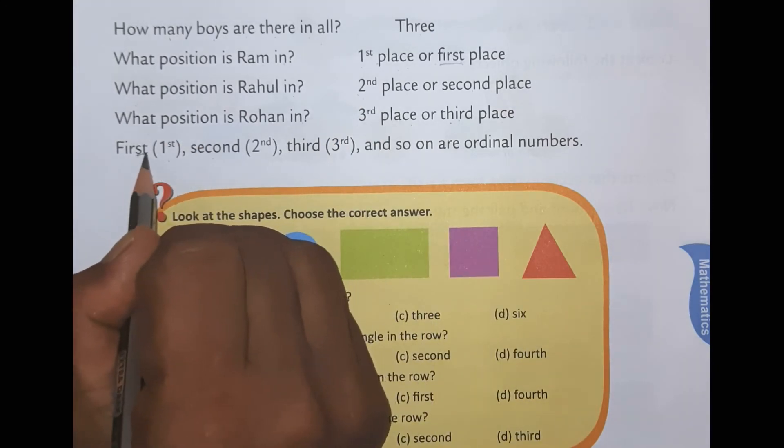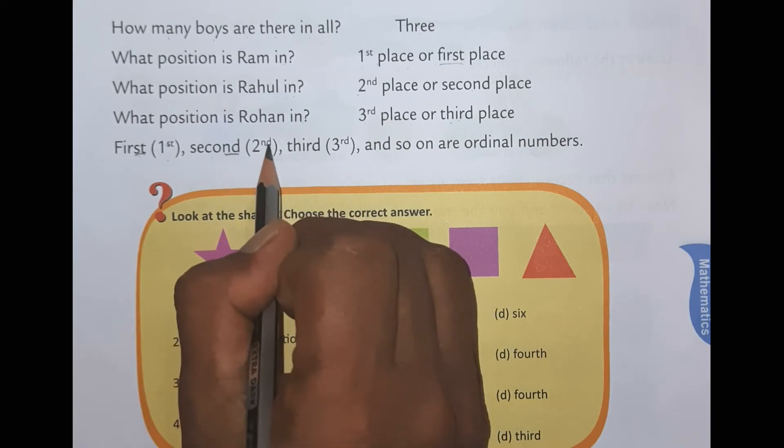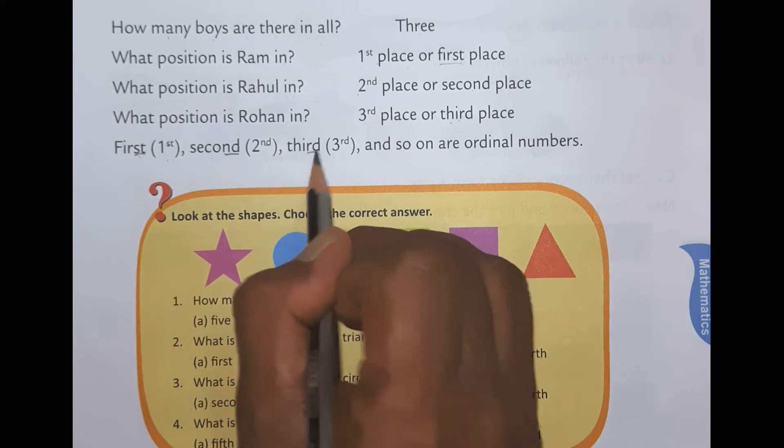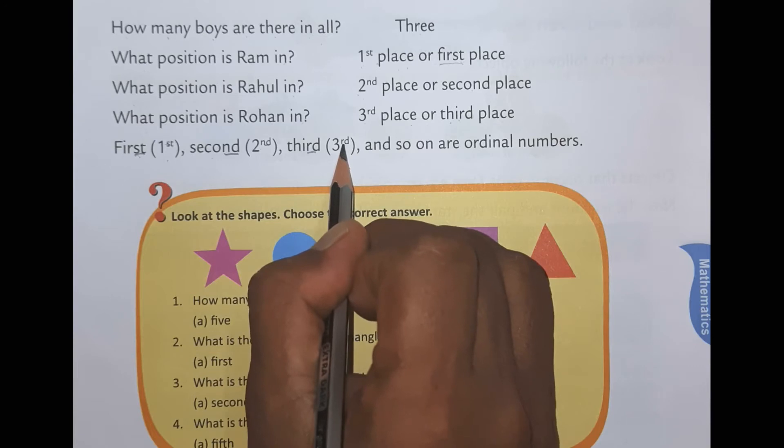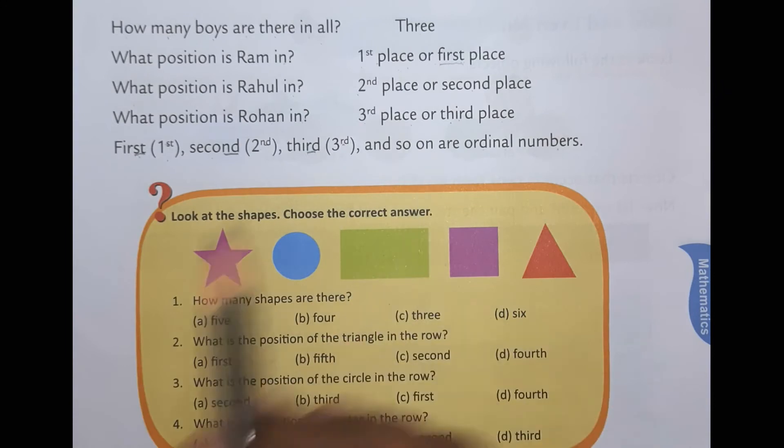S-T. F-I-R, this S-T will come here. N-D will come here. R-D is there. And so on are ordinal numbers. So in this way we can write cardinal numbers.